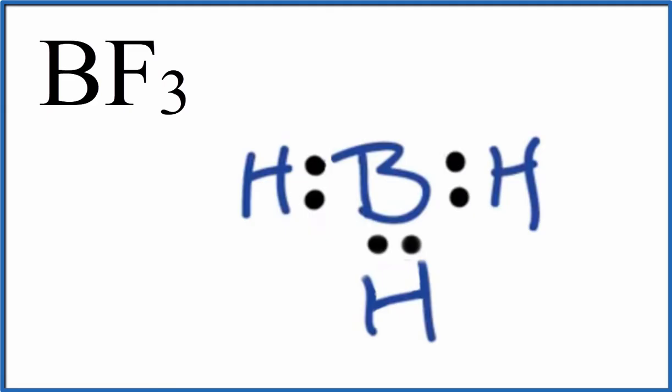What we need to do now is imagine this structure in three dimensions so we can tell where these atoms are oriented. We'll use valence shell electron pair repulsion theory to figure out what shape this BH3 molecule has.